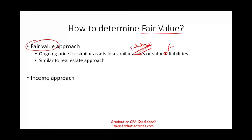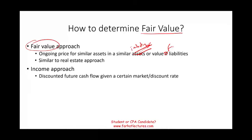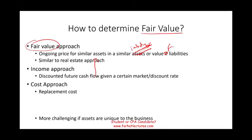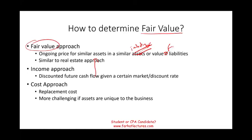Another approach to find fair value is the income approach, where we use discounted future cash flows given a certain market or discount rate depending on the industry. We ask: how much will these assets generate in cash, then discount that to the present using a market rate — and that's how much the company is worth. The third method is the cost approach, or replacement cost: how much would it cost to replace those assets? This is more challenging if the assets are unique to the business, like specialized equipment requiring a manufacturer estimate.